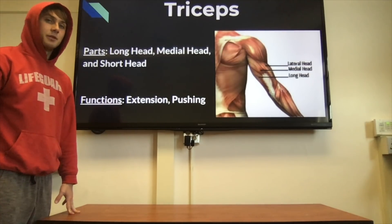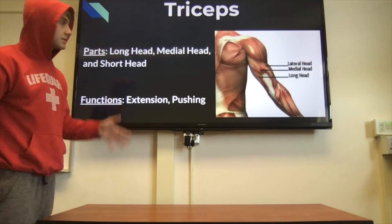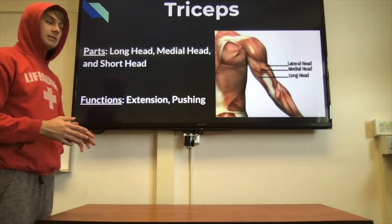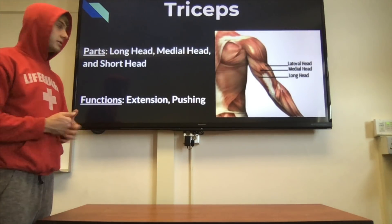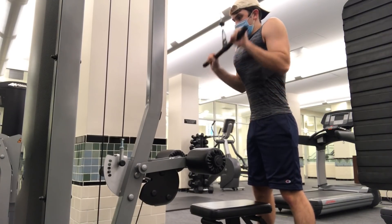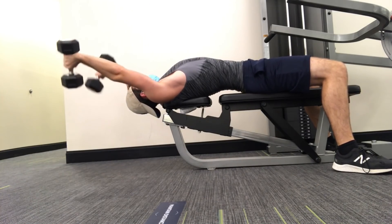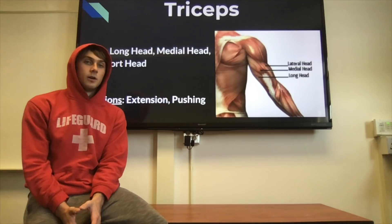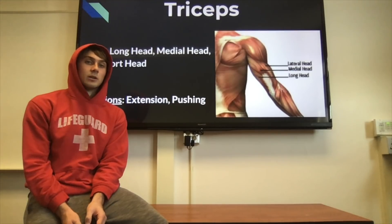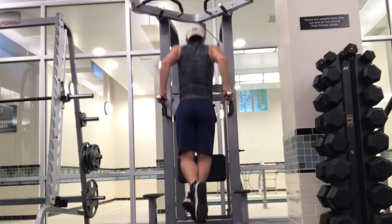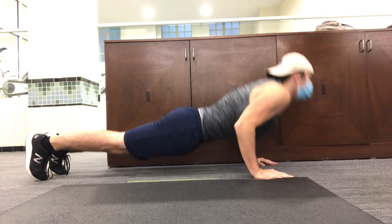The triceps have three heads — hence the prefix 'tri' — the long head, medial head, and short head. You target each head based on arm position: arm behind your body for the short head, arms in front for the medial head, and arms overhead for the long head. The long head is the largest part of the tricep, so overhead tricep exercises are especially encouraged. Keep in mind that triceps are also involved in pushing motions, so bench press, dips, and push-ups work them as a secondary muscle group.